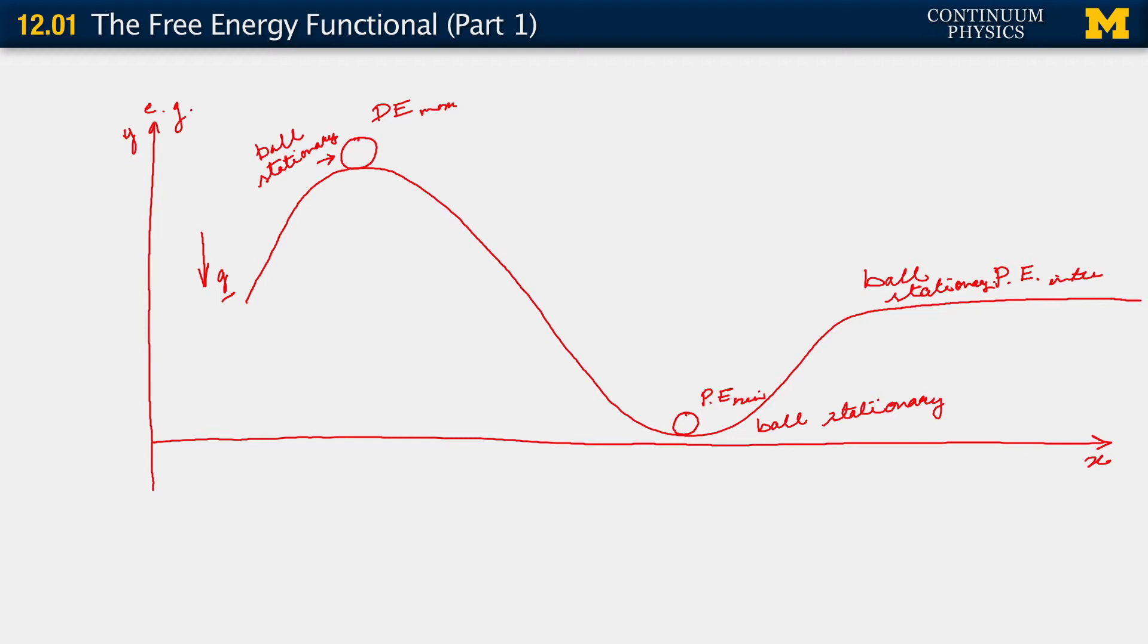Now the fact that the ball is stationary at all these positions is related to the fact that the potential energy is at an extremum. We do know more, however. So each of these is a position of equilibrium. This is also a position of equilibrium, and so is this.